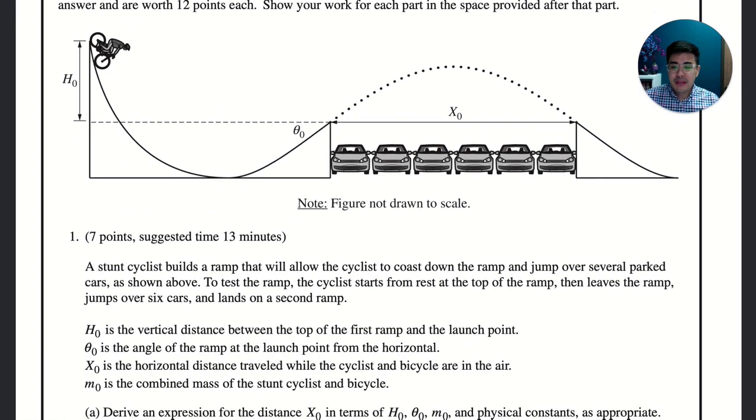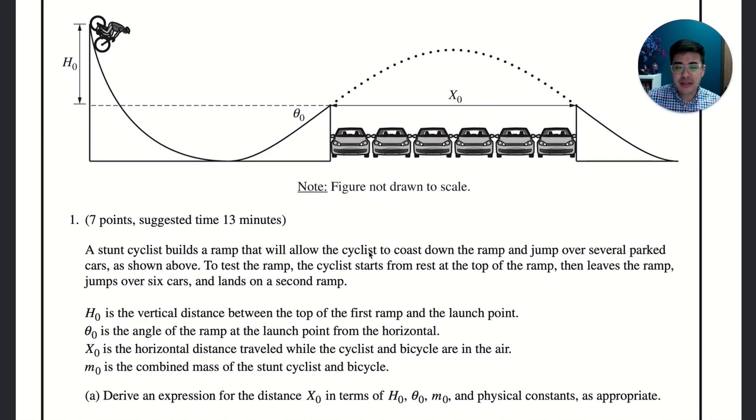So what do we have? We have this stunt cyclist that's building a ramp that will allow cyclists to coast down the ramp and jump over, so I'm assuming this coast means no friction maybe. Unless it says friction we're gonna assume frictionless because that'll make the computations easier. We have the cyclist starting from the top of the ramp, leaving the ramp, and landing at the top of the second ramp. We have starts from rest, so v naught here is zero. It wants us to derive an expression for x naught in terms of all these other variables, or I guess they're constants here.